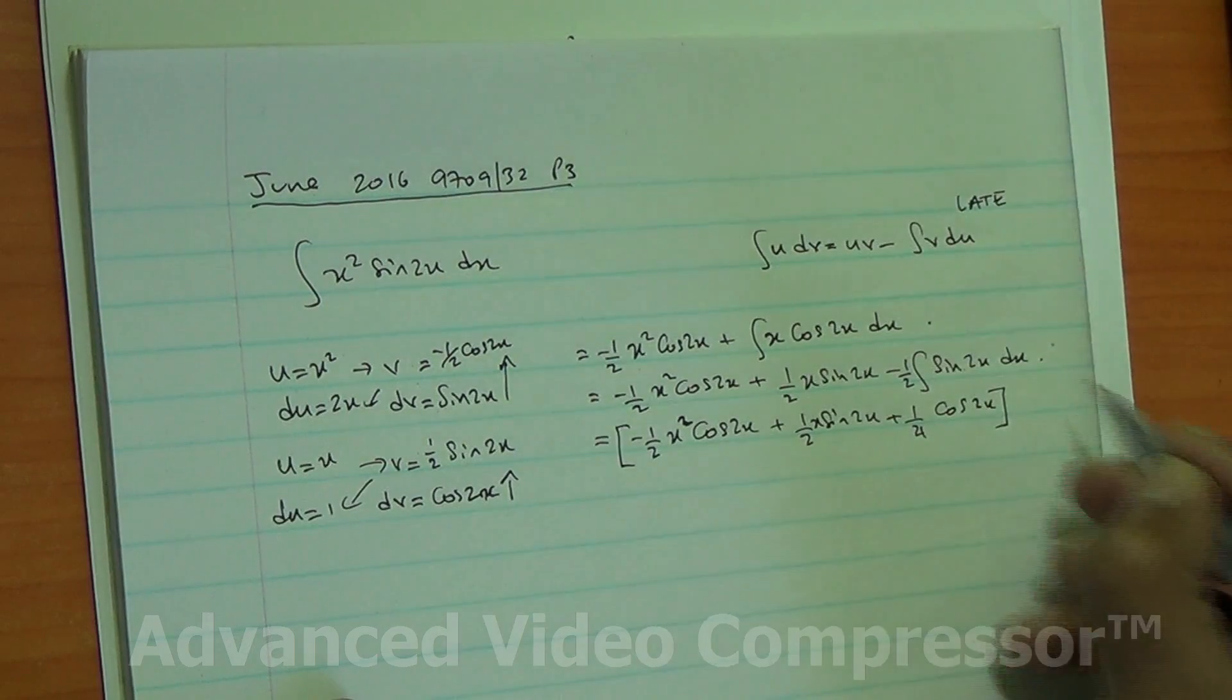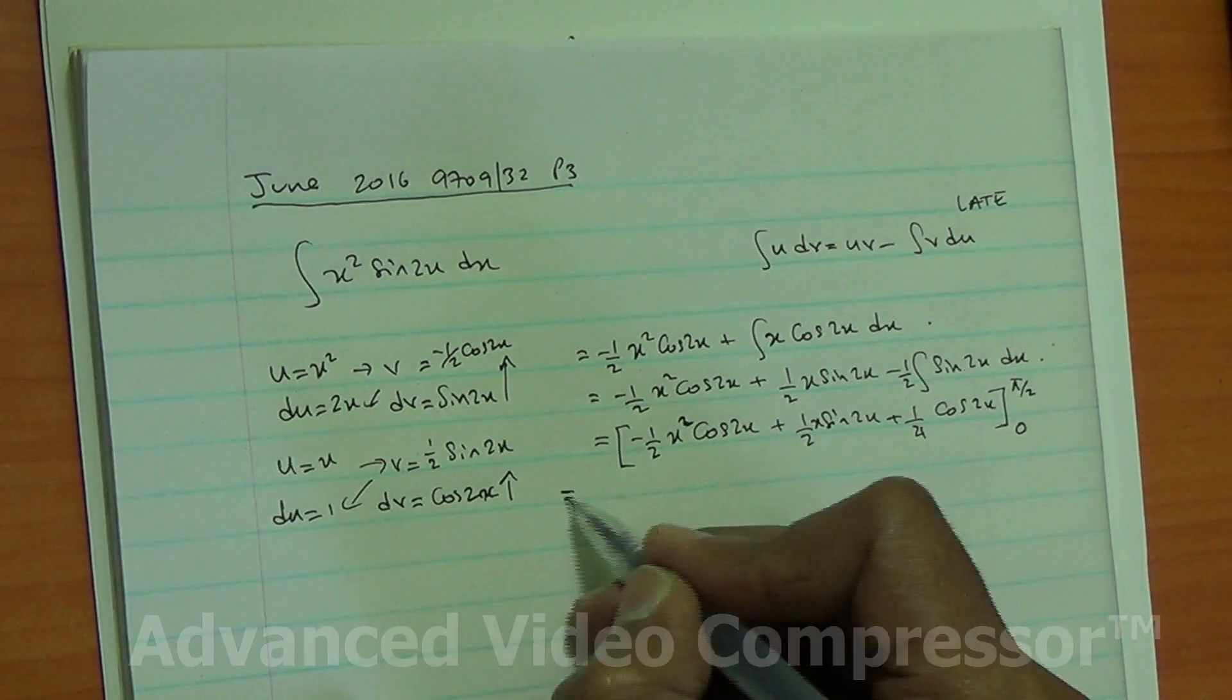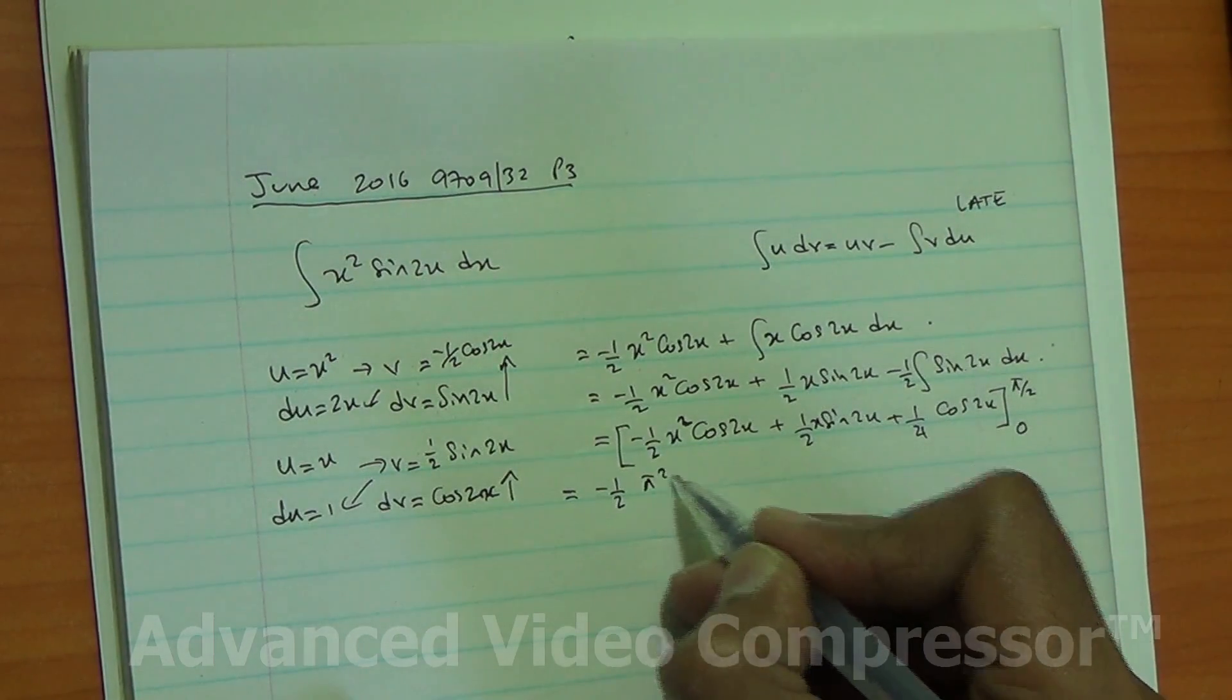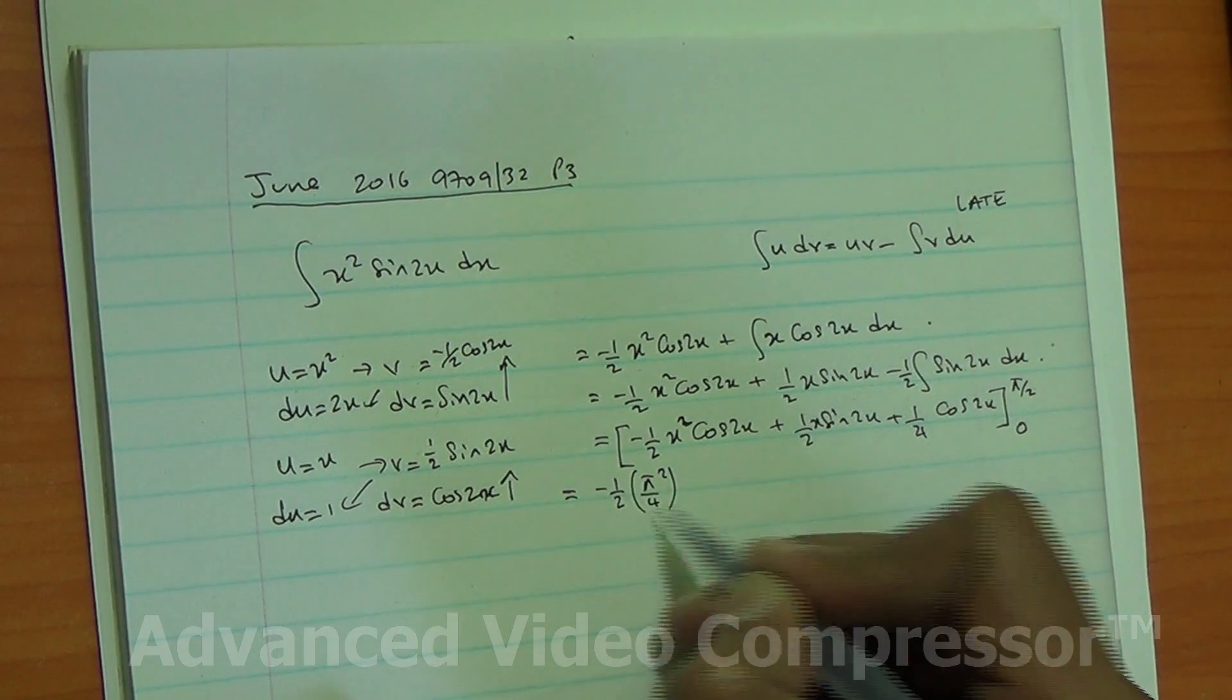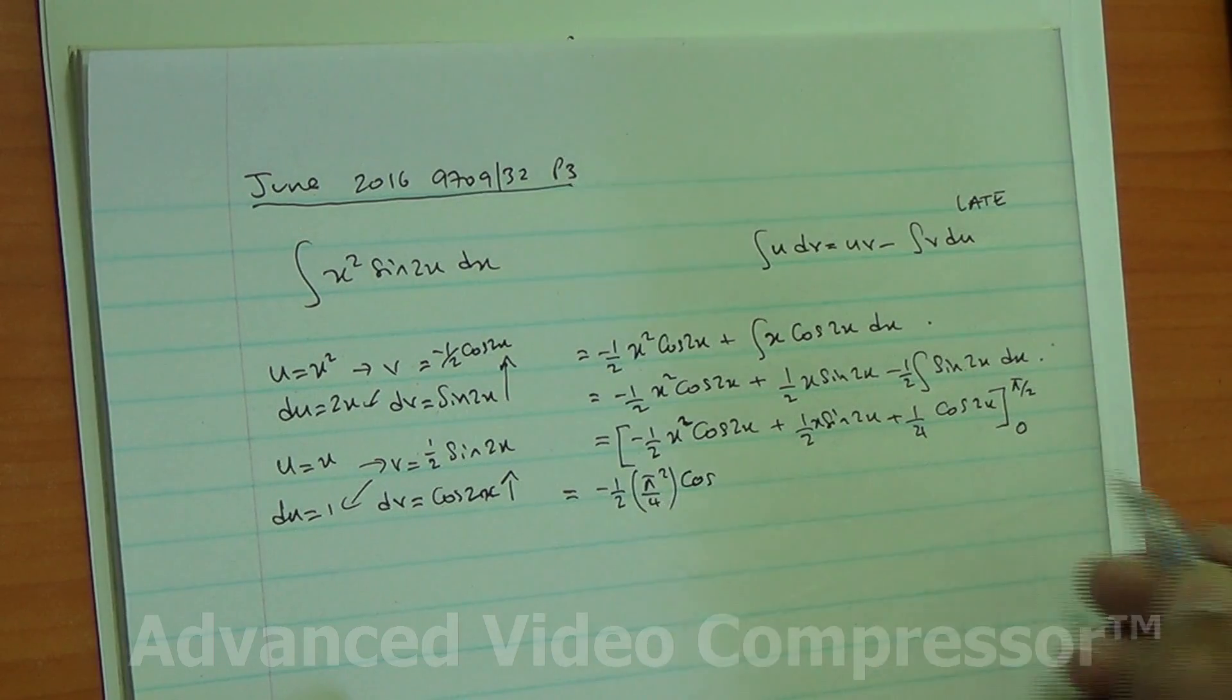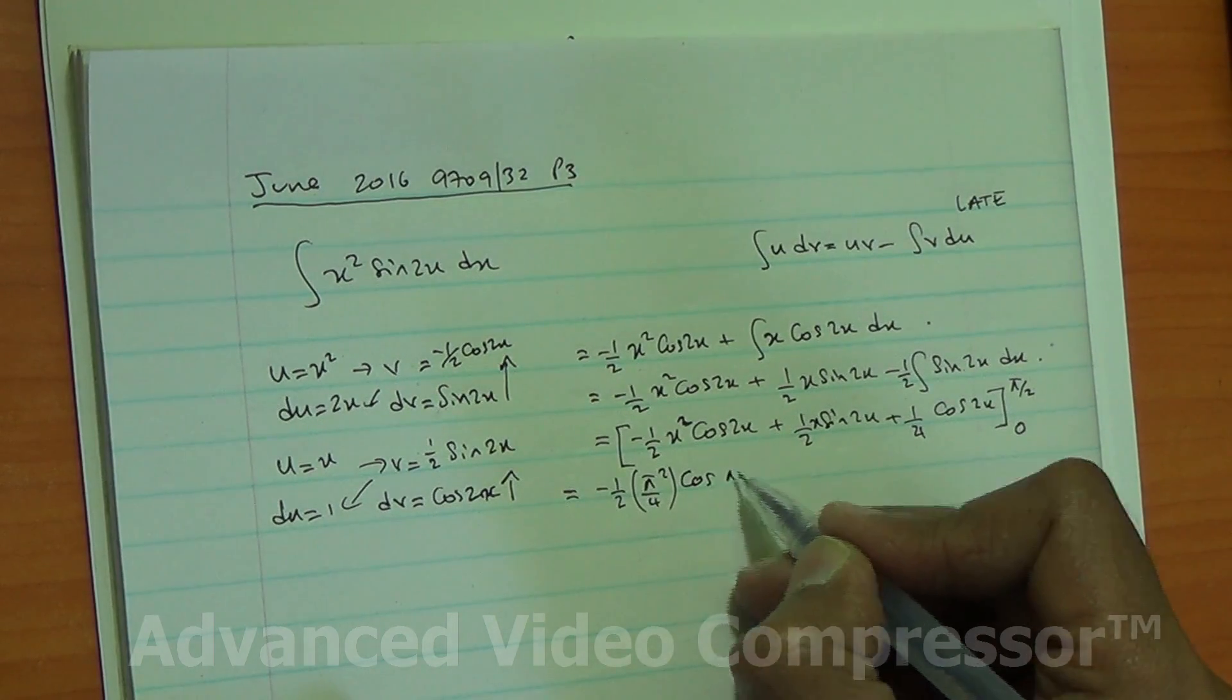And here we are for the expression, however, we need to find the exact value. So that's going to become minus half, and then pi squared upon 4. cos of 2x is cos of pi upon 2 times 2 which is pi, so cos of pi.